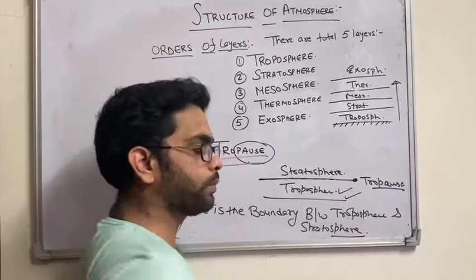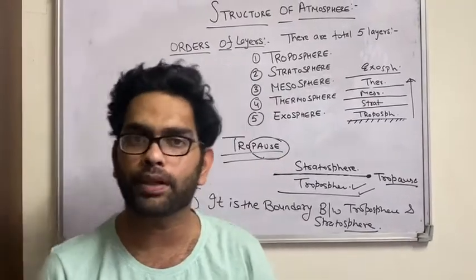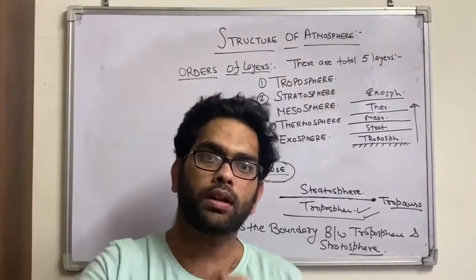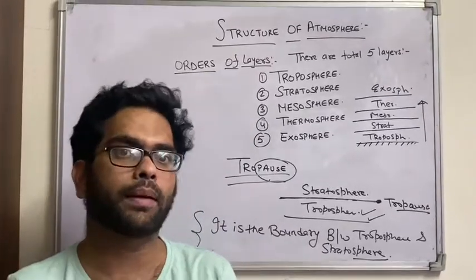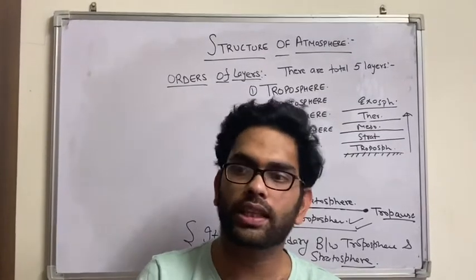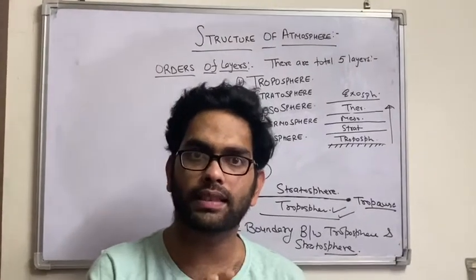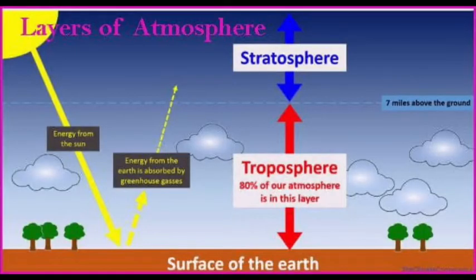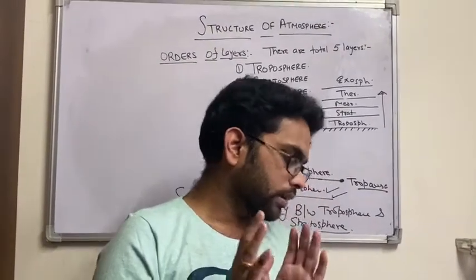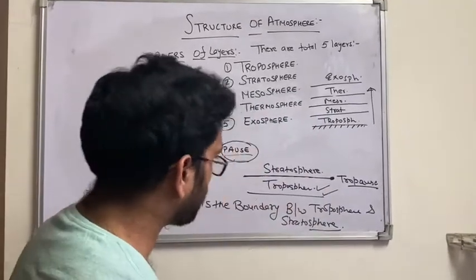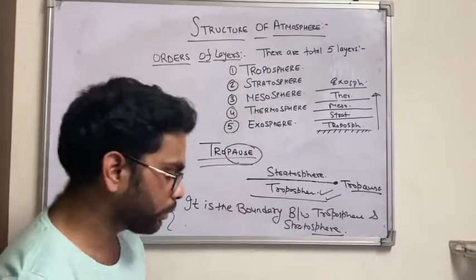One important characteristic of the troposphere is that it helps maintain the temperature of the earth. Because of absorbed rays, the troposphere helps keep the earth at a stable temperature. I hope you are clear with the troposphere.